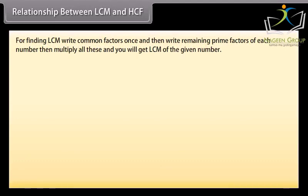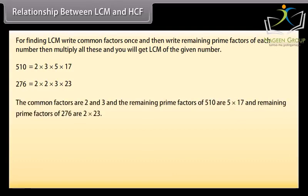For finding LCM, write common factors once and then write remaining prime factors of each number. Then multiply all these and you will get LCM of the given number. 510 equals 2 into 3 into 5 into 17. 276 equals 2 into 2 into 3 into 23. The common factors are 2 and 3, and the remaining prime factors of 510 are 5 into 17, and remaining prime factors of 276 are 2 into 23.